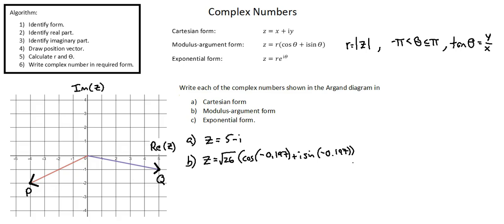I will show you in the Argand diagram where the negative 0.197 is coming from. When we calculate the angle using tangent and using the absolute value of x and y, the angle is from the positive horizontal axis clockwise, which gives us a positive 0.197. When the imaginary number is in quadrant four, you want the opposite sign of the tangent calculation. Thus, our angle value is negative 0.197.